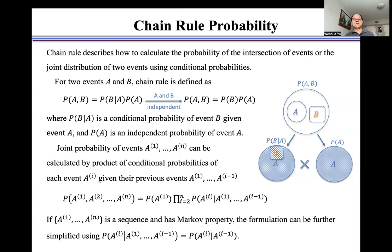Joint probability of events from A1 to An can be calculated by product of conditional probabilities of each event Ai given their previous events from A1 to Ai minus 1. Like here, this is the product operation.